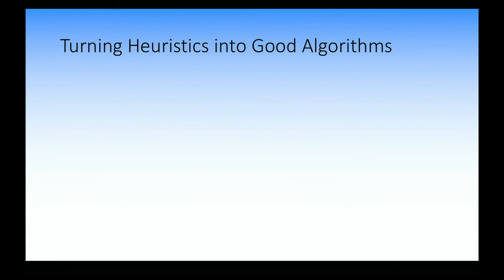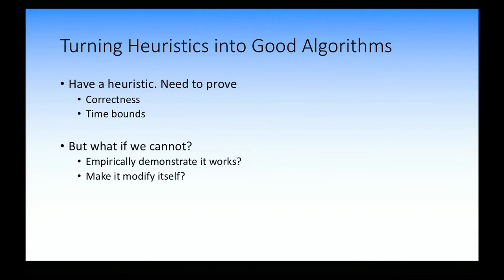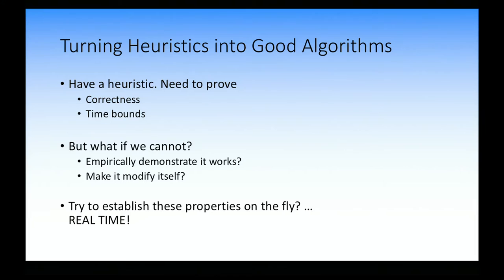If you want to turn a heuristic into a good algorithm, what's the difference between a heuristic and an algorithm? Typically when you have a heuristic, to make it an algorithm, you want to prove correctness and prove time bounds. What if we cannot do that, which happens a lot? We can try to do empirical demonstrations that the heuristic works well. The point of the timers section is to try to establish these properties on the fly — not prove something in the worst case, but establish either correctness or time bounds on the fly as you get the input. That's the real-time aspect: the input is arriving and you have to decide how a heuristic will perform on this input.